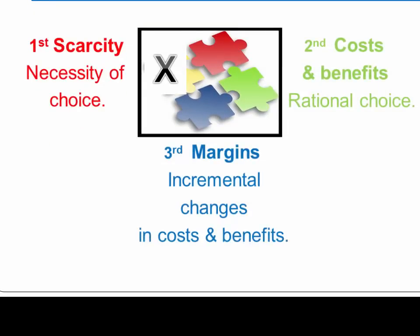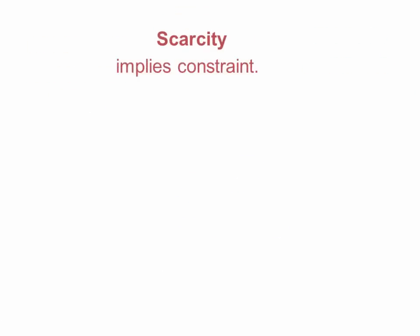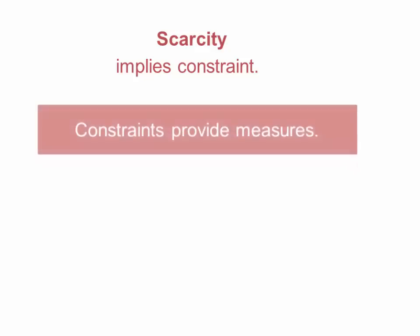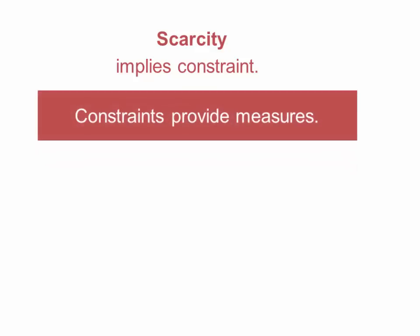And the third piece of decision theory is the idea of margins, and this is just the idea that cost and benefits are constantly changing, so they're not steady but they vary. So let's illustrate these ideas. When we're talking about scarcity, this is used as constraints that have a lot to do with how we weigh the cost and benefits. So constraints provide measures that we can use in determining cost and benefits, and a constraint might be time and it might be energy.